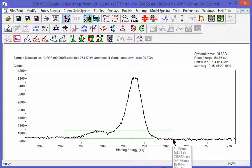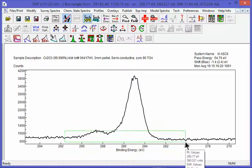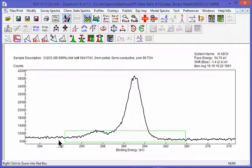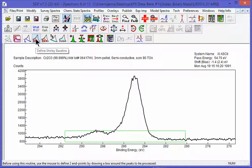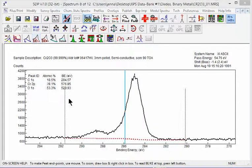First off, let's draw a baseline. We draw a box where we want the baseline to start and finish. We have choices of linear, Shirley, Shirley Plus. Tougaard is good for survey spectra, and B-Spline is also good for survey spectra. So we're going to just use the Shirley baseline.